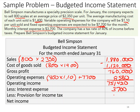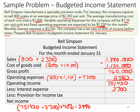And then the provision for income tax — the tax rate is 40% of income before taxes. We need to subtract the interest expense in order to calculate the provision for income taxes. So $751,420 minus the $3,700 in interest, then multiply that times 40%, and we get $299,088 — that is our income tax provision. So our net income will be operating income minus our interest expense minus our income tax provision, which comes out to $448,632.